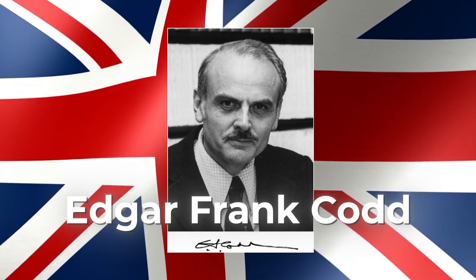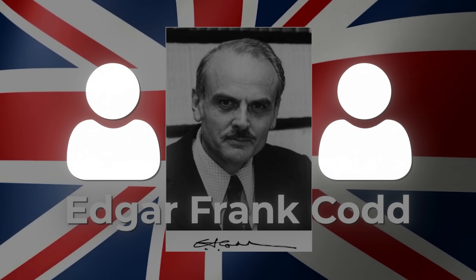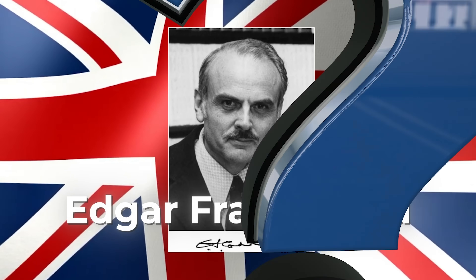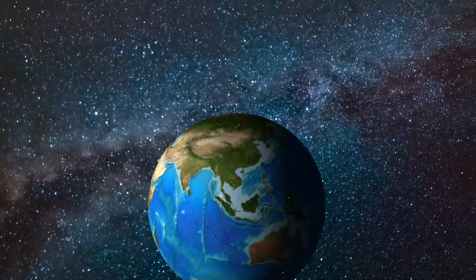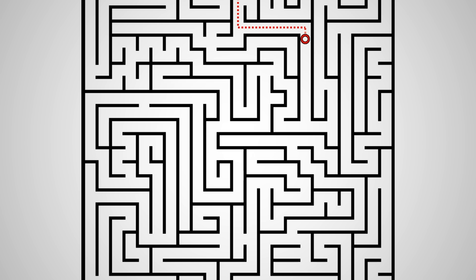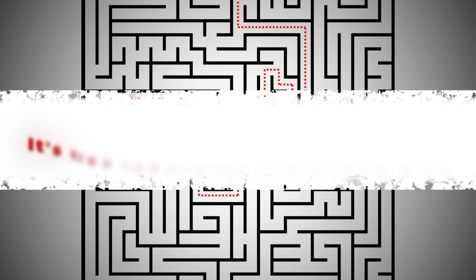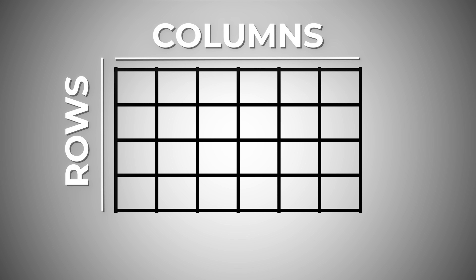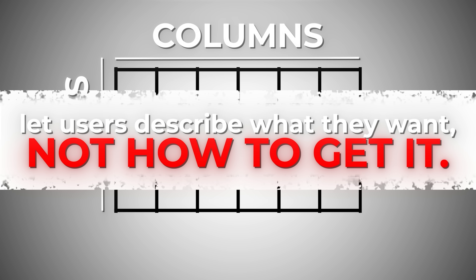Edgar Frank Codd is not your typical IBM employee. While his colleagues build bigger, more complex navigational systems, this British mathematician is asking a dangerous question: what if we're doing everything wrong? Codd sees the database world's dirty secret — every query requires a programmer to navigate a specific path through the data; change the structure and thousands of programs break. It's like rebuilding every roadmap each time you add a new street. His solution is elegantly simple: store data in tables, rows, and columns, like a spreadsheet. Let relationships emerge from the data itself, not from rigid hierarchies. Let users describe what they want, not how to get it.